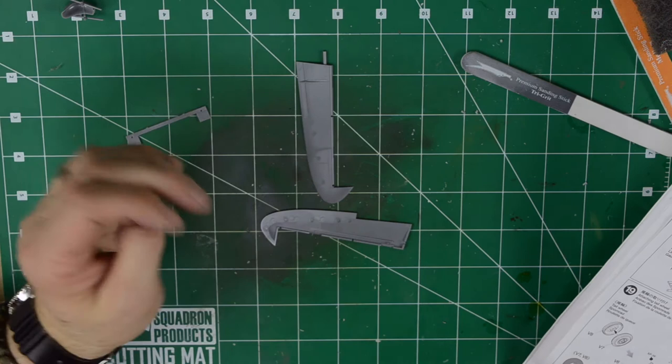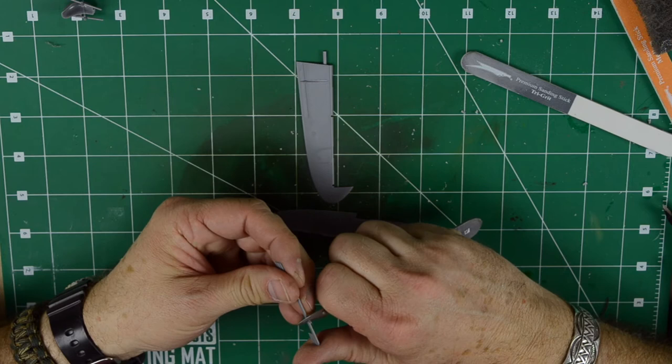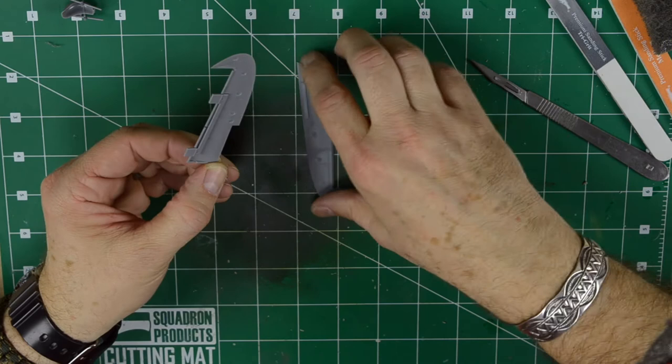Tamiya gives you two versions to put the elevators neutral or in the down position. Since I'm going to make the plane stationary without too much frill, I think I better opt for the neutral position. But at the end of the day, it's no big deal either in any position.